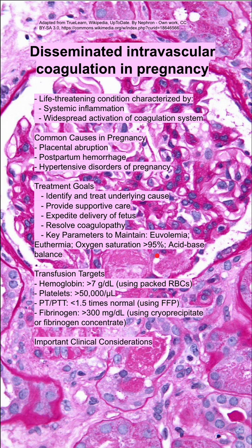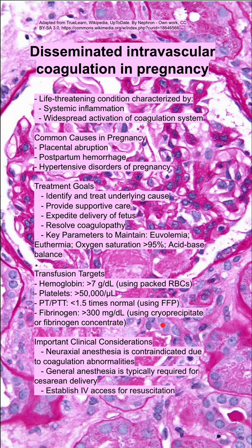Some transfusion targets are listed here. Your hemoglobin should be kept above 7 using packed red blood cells. Platelets above 50,000. Your PT and PTT less than 1.5 times the upper limit of normal — you can achieve that with FFP. And fibrinogen should be at least 300 using cryoprecipitate or fibrinogen concentrate.